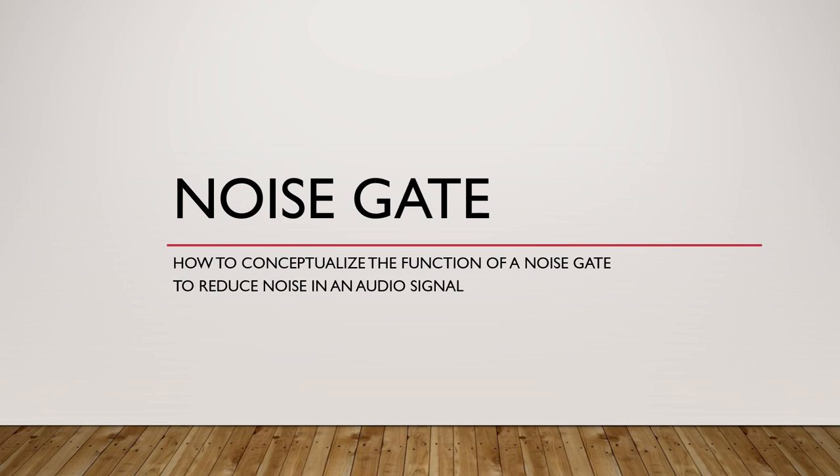This video describes how a noise gate works using an analogy. A noise gate is an audio device or plug-in that suppresses noise in your audio signal. The user sets a threshold, indicating how loud a sound needs to be in order to be heard. The default for a noise gate is to suppress all sound, allowing nothing through, until a sound is louder in volume than the threshold. Then the gate opens, and audio is allowed to pass through the channel. The result is that loud sounds, such as voices or instruments, get through, while quiet noises like hiss or buzz are suppressed.